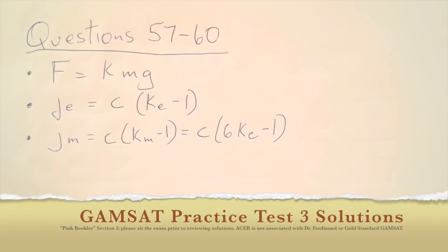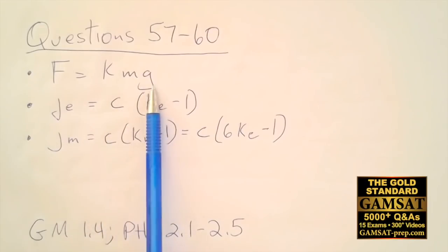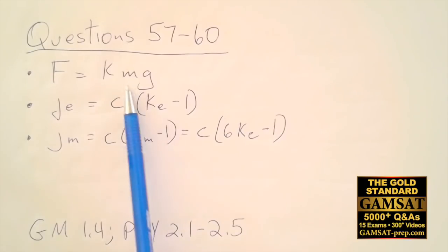Questions 57 to 60. A little bit of physics, but mostly math. We're given some equations and we have k times the weight. Weight is given by mg, mass times gravity, and we're given a couple more equations. We're also told that the mass and c can be regarded as constants.